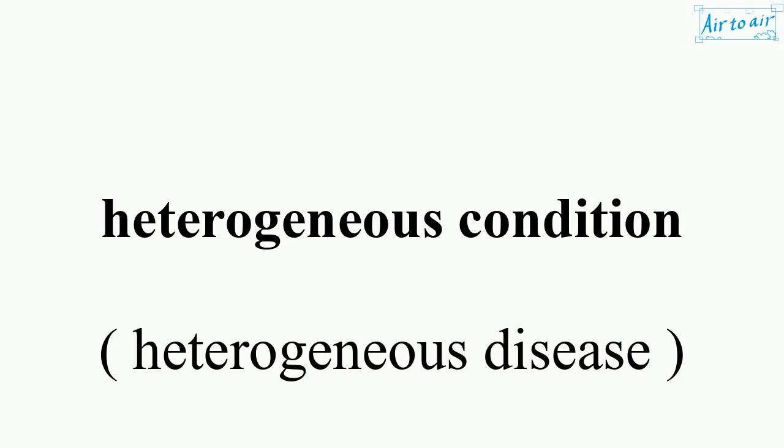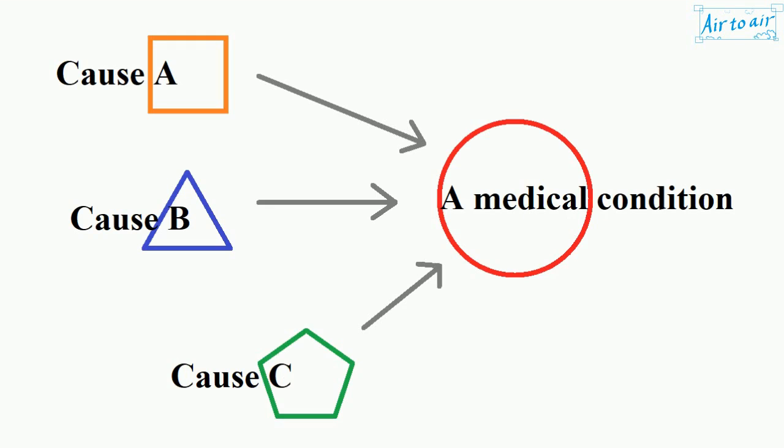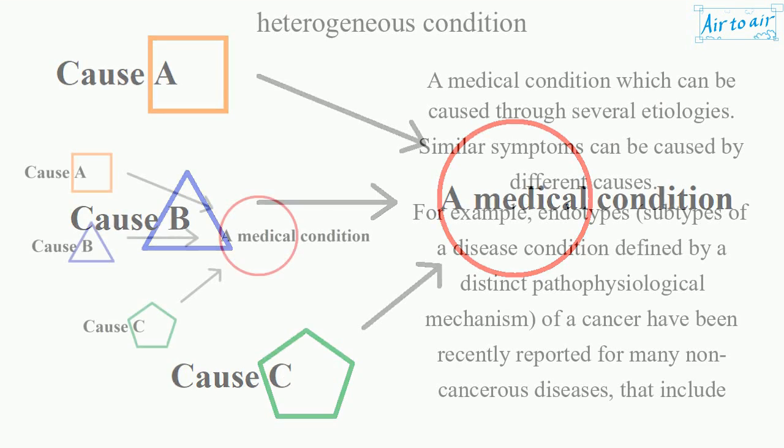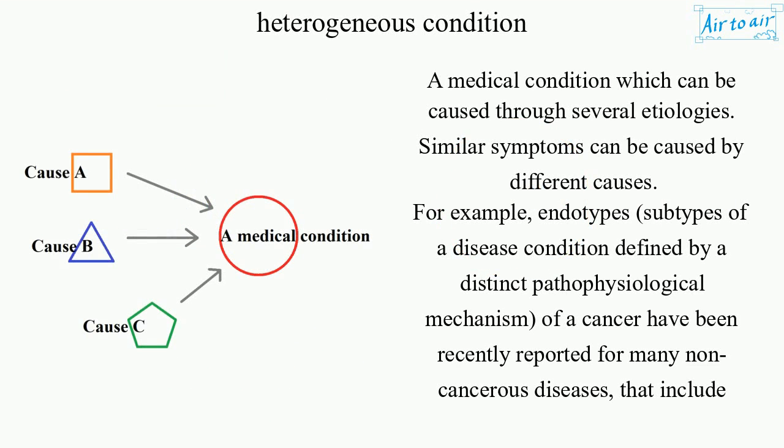Heterogeneous Condition. A medical condition which can be caused through several etiologies. Similar symptoms can be caused by different causes.